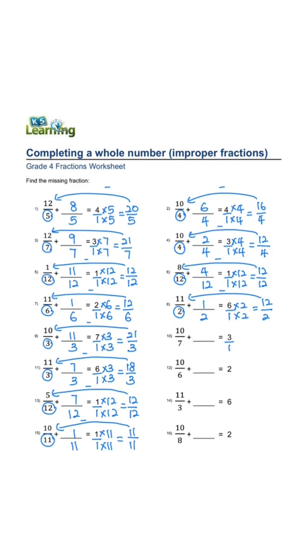denominator is 7. 3 times 7, 1 times 7 equals 21 over 12.